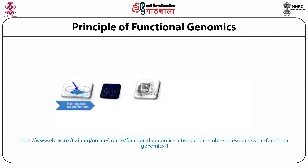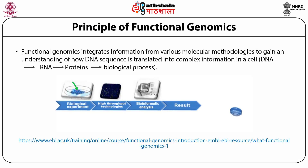The principle of functional genomics is that it integrates information from various molecular methodologies to understand how DNA sequences translate into complex information in a cell — from DNA to RNA to protein to biological system. It involves high-throughput biological experiments and high-throughput technologies like next-generation sequencing. The biological information is then converted into results using bioinformatics tools, yielding information about genes, transcripts, and proteins.